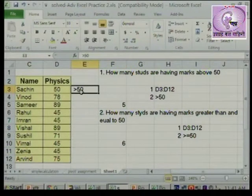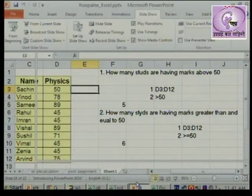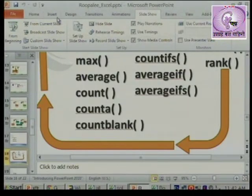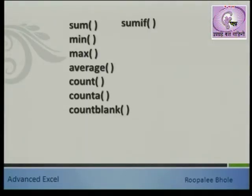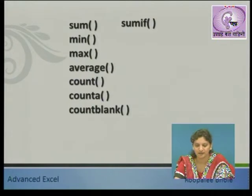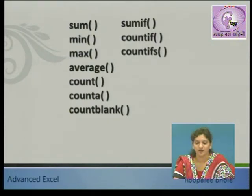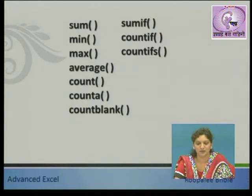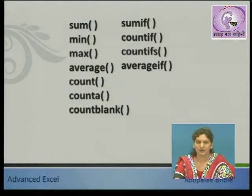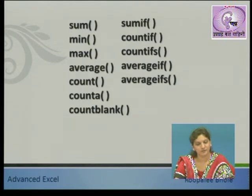COUNTIF ja paddhati ne lihila zha to, tyas paddhati ne ithli baki hi functions lihili zhaanare. For example, SUMIF he hi COUNTIF sarkhe lihila zhaanare - fakta ek extra entity SUMIF madhye jast dihli aahe. COUNTIF kadhi vaparaiche ani COUNTIFS kadhi vaparaiche - jeva multiple criteria asatil teva COUNTIFS vaaparnar. AVERAGEIF aani AVERAGEIFS hi apan baghu.